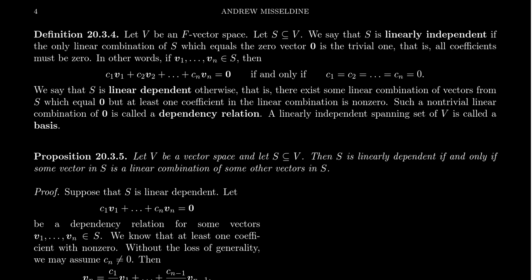Let me remind you of some definitions you likely know from a previous linear algebra course, such as Math 2270 at Southern Utah University. Let V be an F-vector space, where F is a field. When it's clear what the field is, you can just say V is a vector space. But as we'll see going forward, the fields often change from setting to setting, so we may have to specify the field of scalars for the vector space.